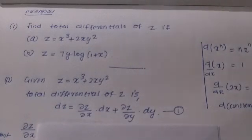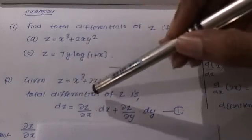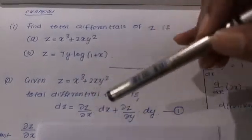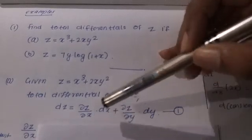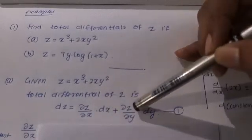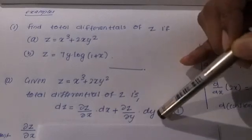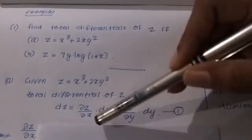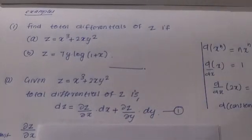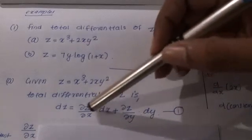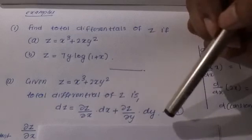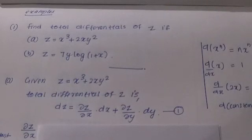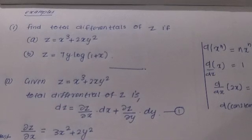The total differential of z is given by dz = (∂z/∂x)dx + (∂z/∂y)dy. Now we will find the partial derivatives. First we find ∂z/∂x.